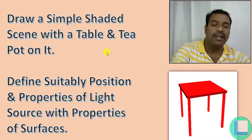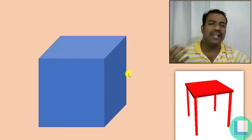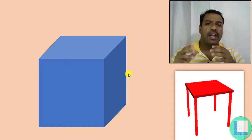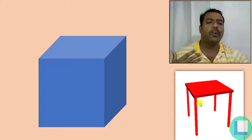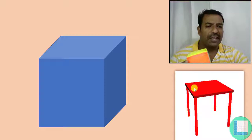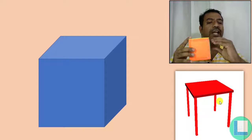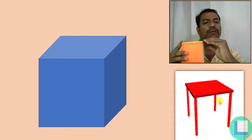As a first part of this program, we need to concentrate on how to build the table. Bringing in a teapot is just one API call away. The table we are going to form will be built using cubes. For the table top, we take a cube and compress or scale it down with respect to the Y axis, keeping the X and Z axes intact.